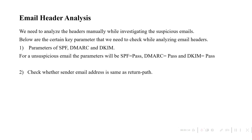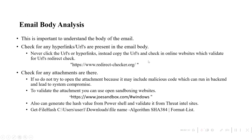For a deeper email header analysis, the three key parameters are SPF, DMARC, and DKIM. For a legitimate email, all three will be in a pass state. If SPF equals soft fail or hard fail, an analyst can conclude it is a spam email. If the sender email address and the return path are the same, the email is not spoofed. If they differ, it indicates a spoofed email.